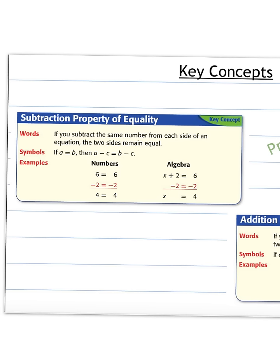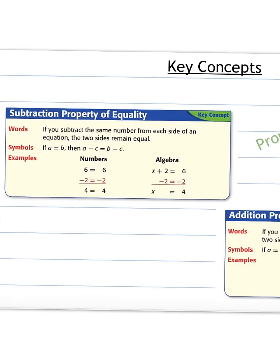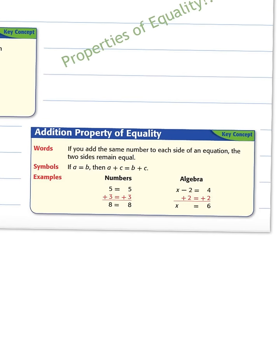In algebra, this is what we just found: subtract 2 from both sides and the equations are still the same. And here is our addition property of equality: if you add the same number to both sides, the sides still remain equal. So if A equals B and we add C to both sides, they still equal the same. You can look at how that looks as numbers and with our algebra.